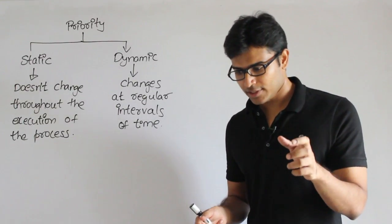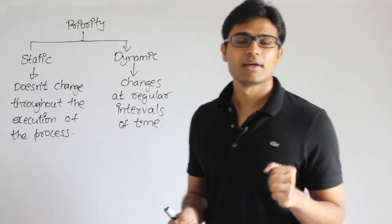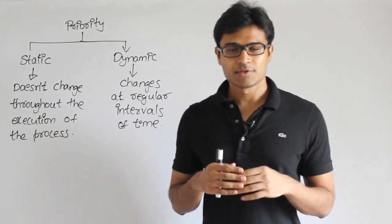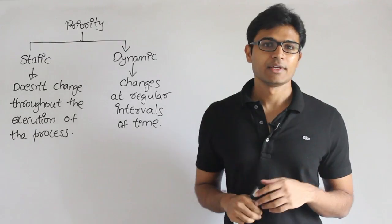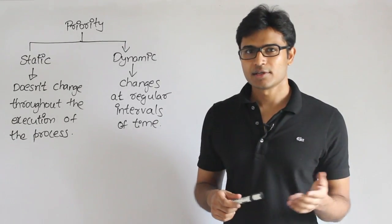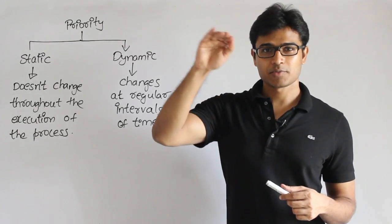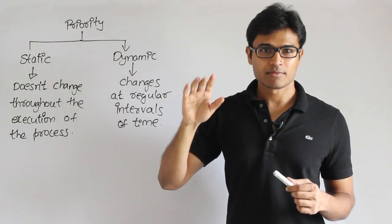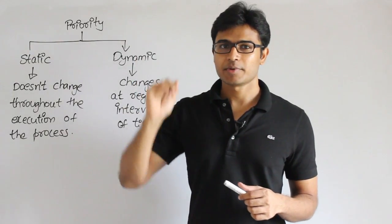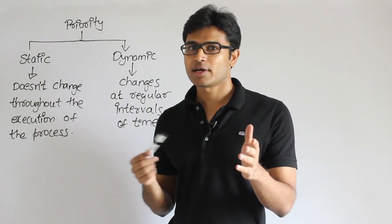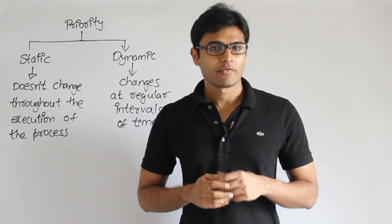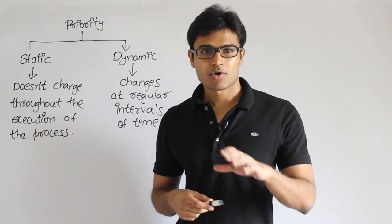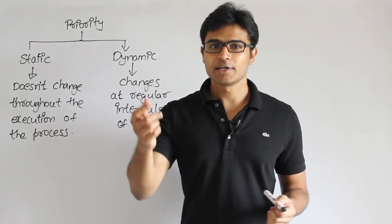Now depending on the priority, whichever is having the highest priority - see implementations may vary, but sometimes highest priority means the lower number and lowest priority means the higher number. But whatever it is, I am talking about the highest priority, whether you assign lower number or higher number. Now what we do is among all the available processes, I'll pick up the one with the highest priority and then run it.